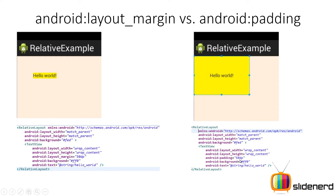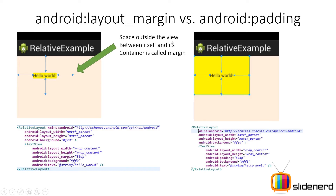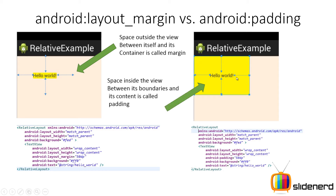So what is the difference? You have the space outside the text view in the form of these four arrows. And here, you have the space inside the text view from within the boundaries of the text view — that is the content, that is the text "Hello World" — and the boundaries of the text view. There's a rectangle and there's a space between them, and that's what padding is. So space outside the view between itself and its container is called the margin. Space inside the view between the boundaries and its content is called padding.